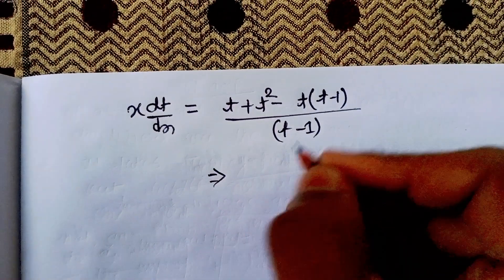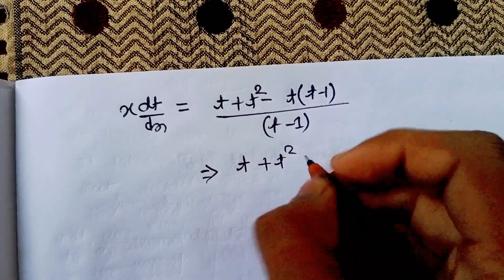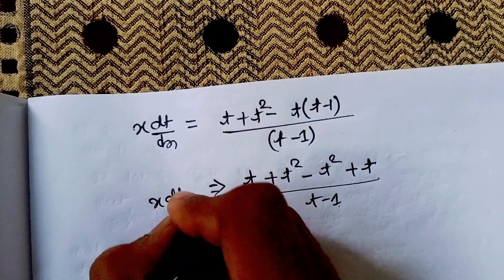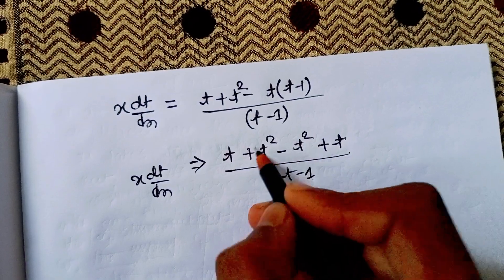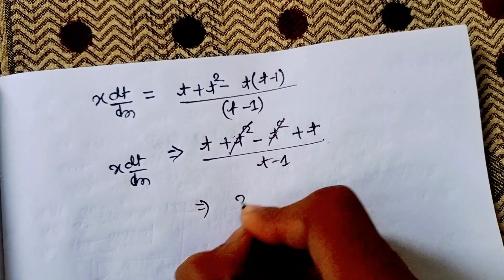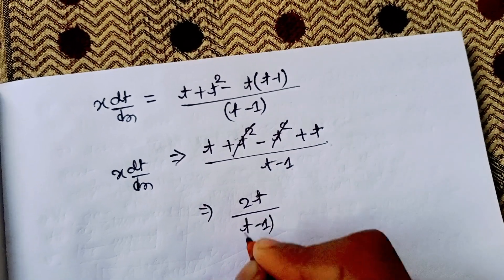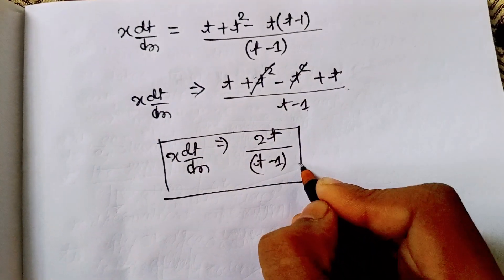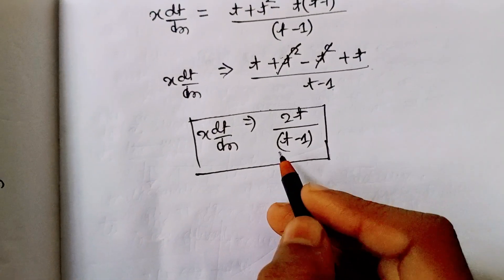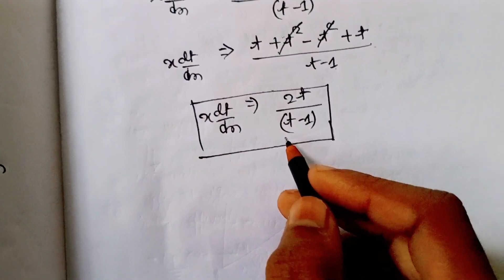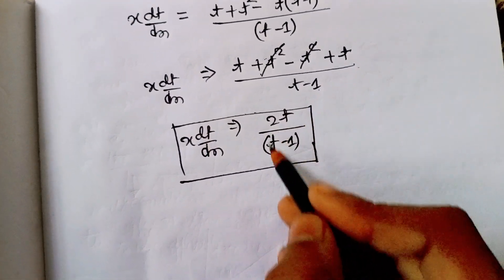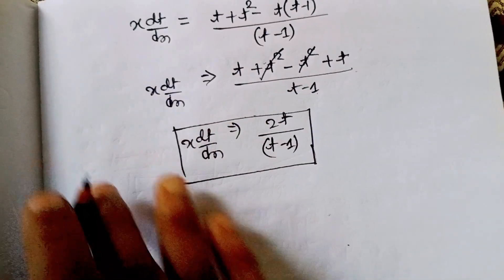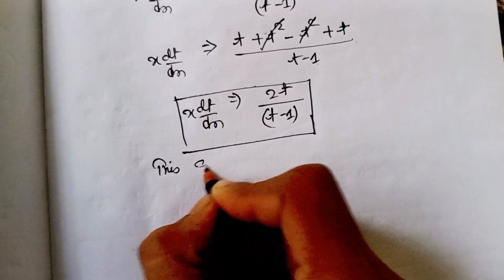अब इसको थोड़ा solve करें: t(1+t)/(t−1) − t = [t + t² − t(t−1)] / (t−1) = [t + t² − t² + t] / (t−1) = 2t/(t−1)। तो x(dt/dx) = 2t/(t−1)। Notice करिए — अब variable separable हो गया है! पहले homogeneous था, मिला हुआ था, variable separate नहीं हो सकता था — लेकिन अब हो सकता है।